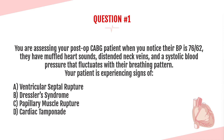The answer is D, cardiac tamponade. This patient is a picture-perfect representation of cardiac tamponade. You have hypotension with a narrow pulse pressure, muffled heart sounds, distended neck veins, and a systolic pressure that fluctuates with their breathing pattern, also known as pulsus paradoxus.